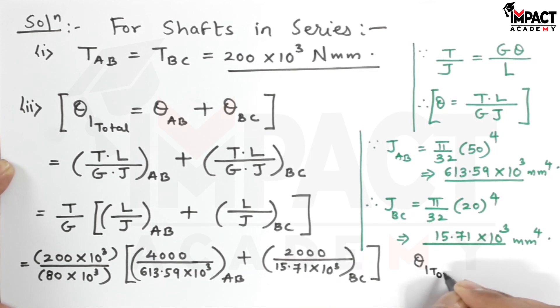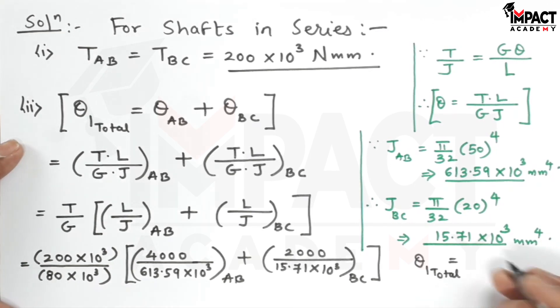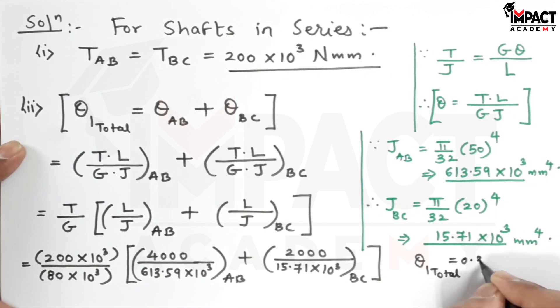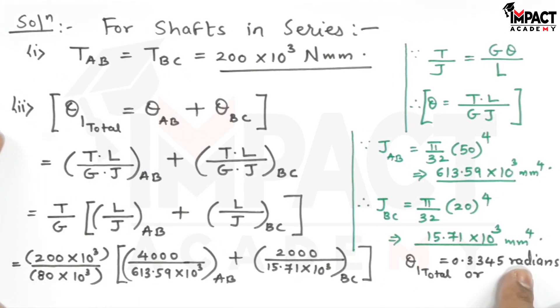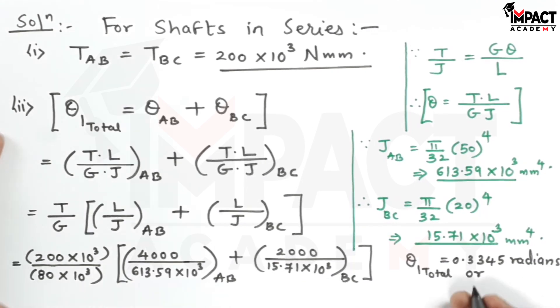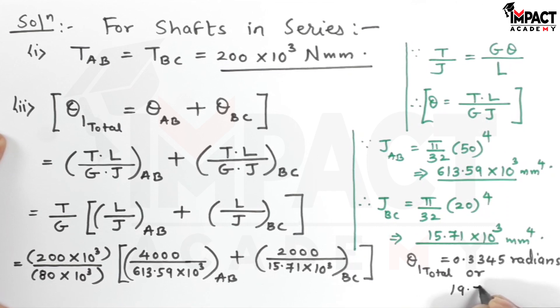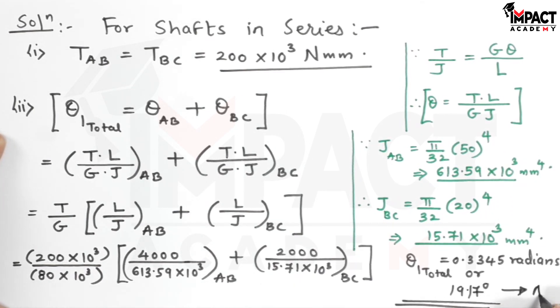On calculating, my answer comes out to be 0.3345 radians. Multiply this answer by 180/π to get the answer in degrees: 19.17°. That's the answer.